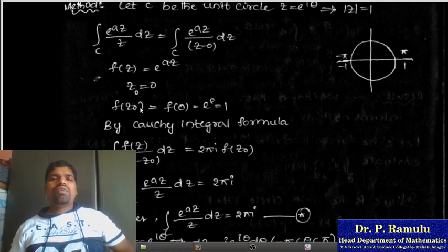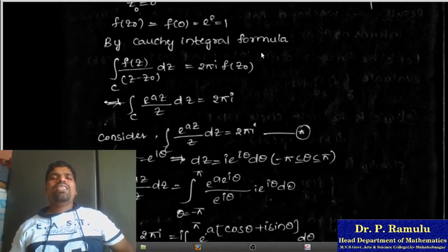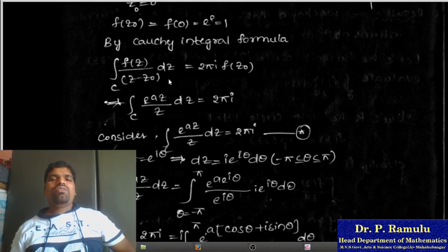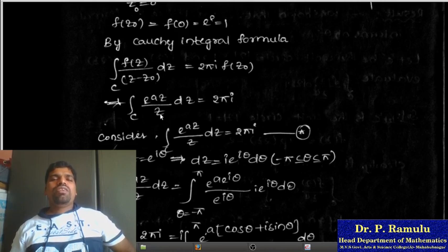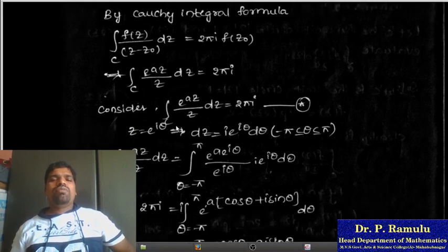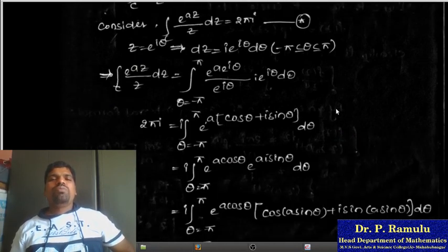Here f(z₀) = f(0) = e^0 = 1. By Cauchy's integral formula, the integration over C of f(z)/(z - z₀) dz equals 2πi f(z₀). Here f(z) = e^(az) and z - z₀ = z, so the integration over C of e^(az)/z dz equals 2πi × 1 = 2πi. This is shown — marking it with a star.